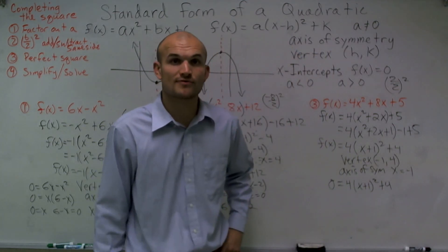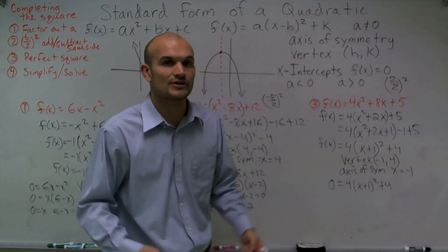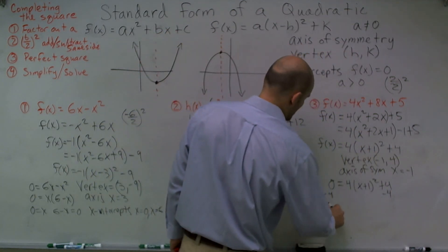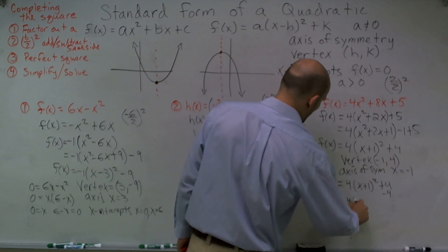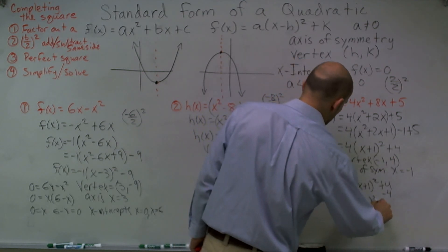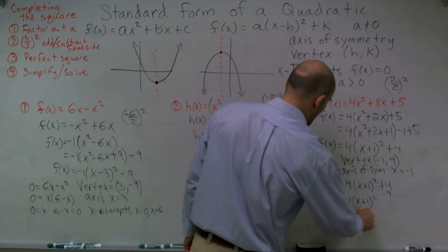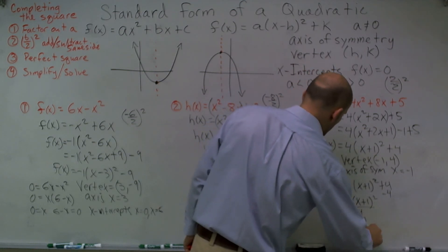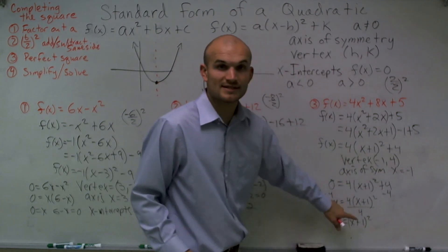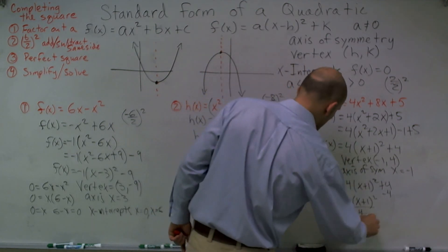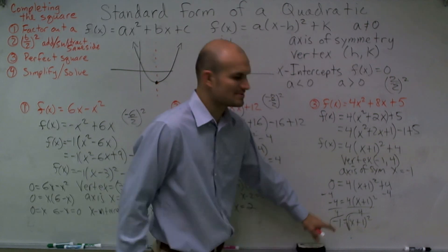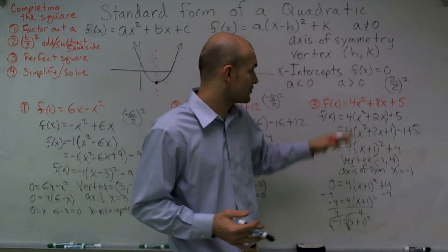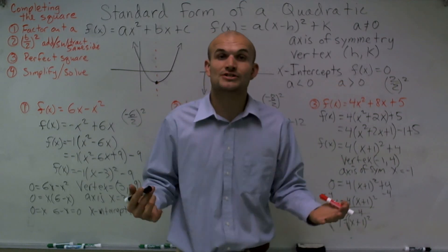So if we just solve this equation for x, it would just be the same as factoring or using the quadratic formula. So I'll subtract by 4. So I get -4 = 4(x + 1)². Divide by 4. -1 = (x + 1)². Now, I'll have to take the square root on both sides. And what you'll notice is I'm taking the square root of a negative number. Therefore, this problem is going to have no real solutions for your x-intercepts.